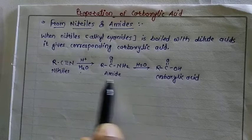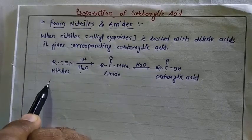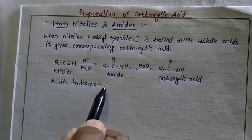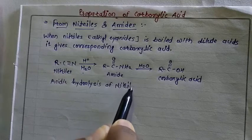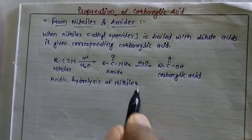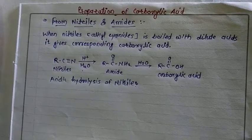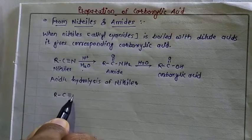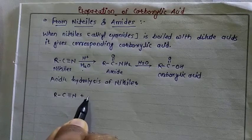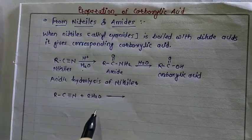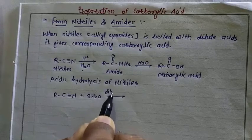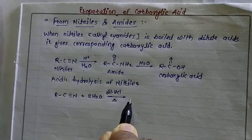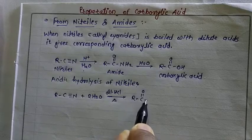So we can say this reaction is the acidic hydrolysis of nitriles. In compact form: R–C≡N plus 2H₂O, in the presence of dilute HCl and on heating, gives carboxylic acid.